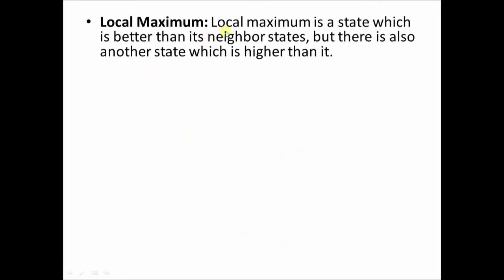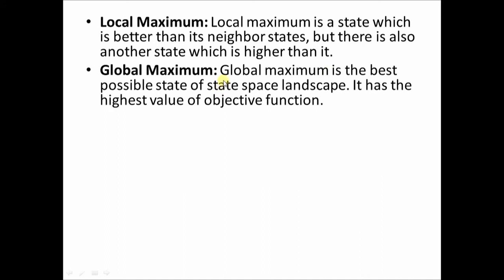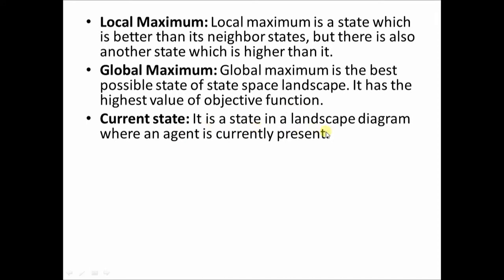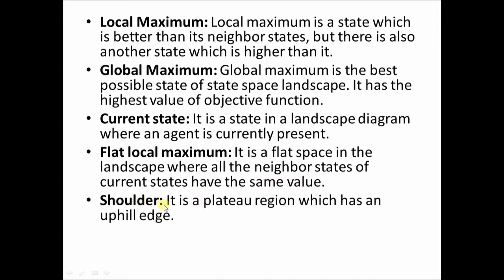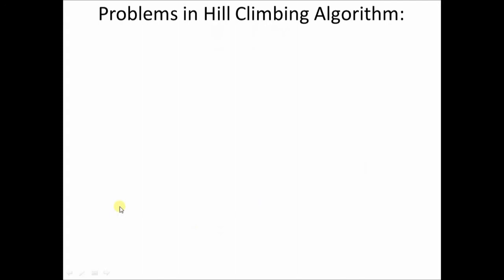A local maximum is a state which is better than its neighboring states, but there is another state which is higher — that is the global maxima. Global maxima is the best possible state in the entire state space landscape, with the highest value of the objective function. The current state is where the agent is currently present in the landscape. The flat local maxima, also called a plateau, is a flat space where all neighboring states of the current state have the same value. A shoulder is a plateau region that has an uphill edge.